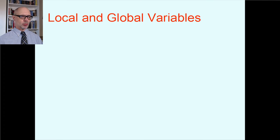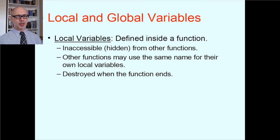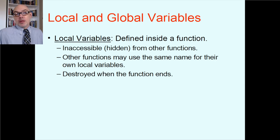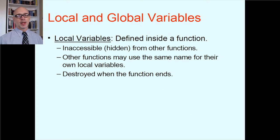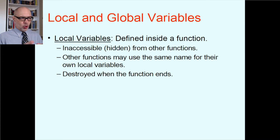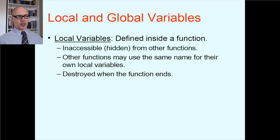Let's review the difference between local and global variables. Local variables are variables defined inside a function — maybe the main function, maybe one of the other functions. Variables defined inside a function are called local, and that's the normal thing. Those variables are inaccessible and hidden from other functions. Functions can only access the stuff that was sent in by the parameters normally, so local variables in other functions are not accessible.